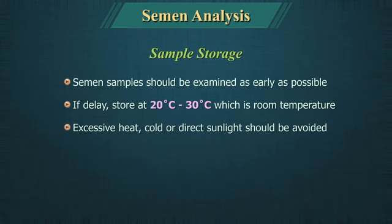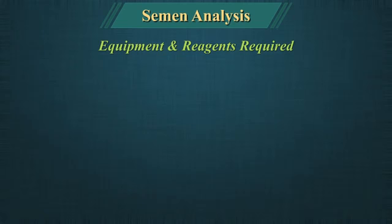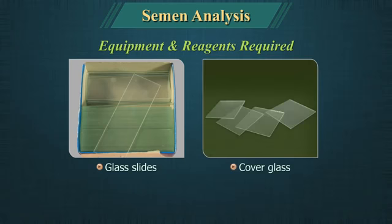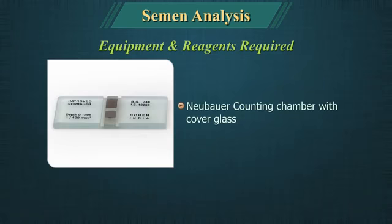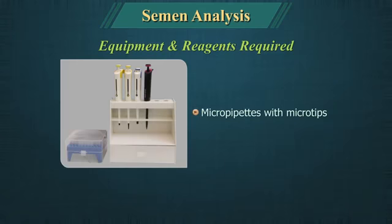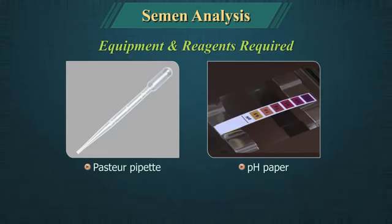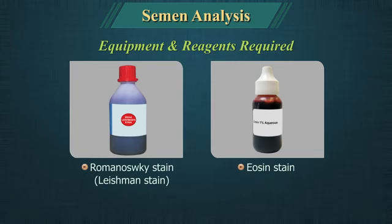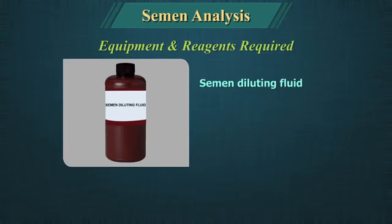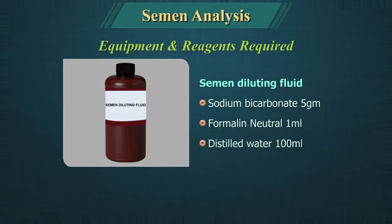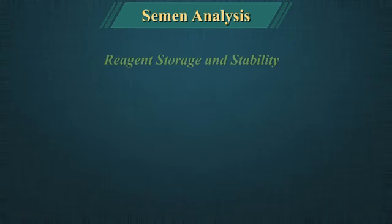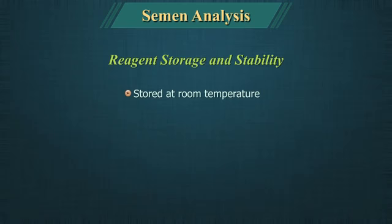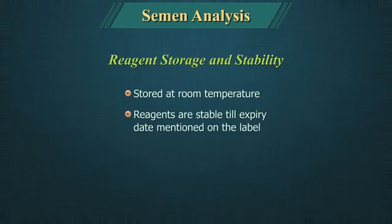Excessive heat, cold or direct sunlight should be avoided. Do not store the sample in a refrigerator. Equipment and reagents required for semen analysis include glass slides, cover glass, Neubar's counting chamber with cover glass, micro pipettes with micro tips, Pasteur's pipette, pH paper, Leishman stain, Eosin stain, and semen diluting fluid containing sodium bicarbonate, formalin neutral and distilled water, and a microscope. Reagents are to be stored at room temperature and are stable till the expiry date mentioned on the label.